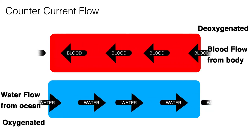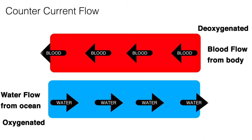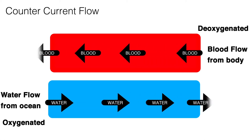The main way that gills optimize oxygen transfer, beyond the high surface area and thin membranes, is what we call counter-current flow. This means that the blood inside the gills flows in the opposite direction to the water flowing outside the gills. We can see using this graphic how it helps maximize diffusion.